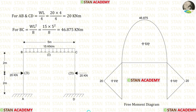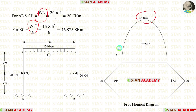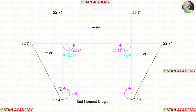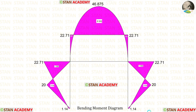Now we are going to draw the bending moment diagram. First, we make the free moment diagram by assuming all spans are simply supported beams and using the appropriate formulas to find the moments. Then, using the directions of the end moments, we draw the end moment diagram. Finally, we combine the free moment diagram and the end moment diagram to obtain the complete bending moment diagram.